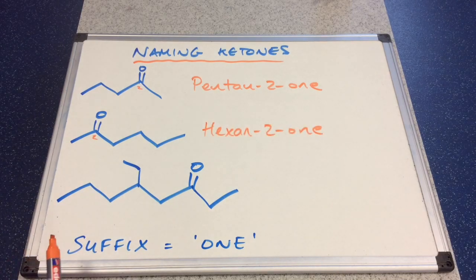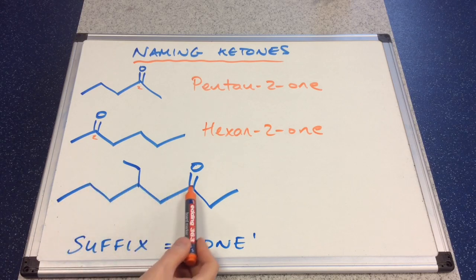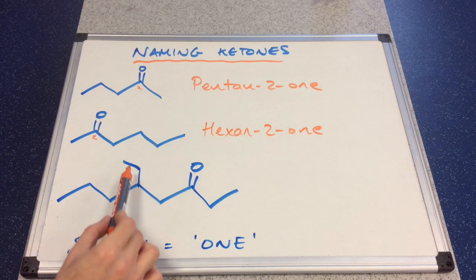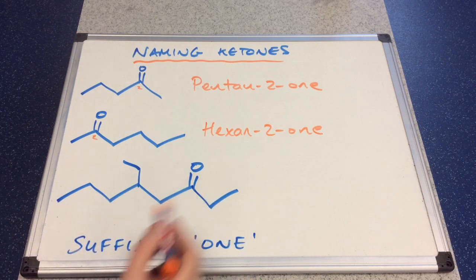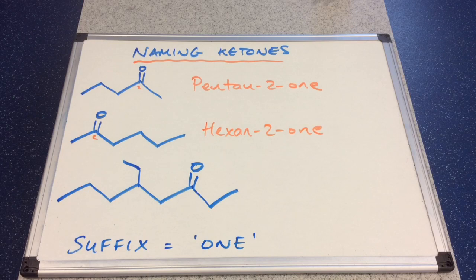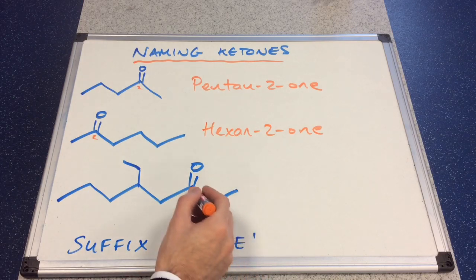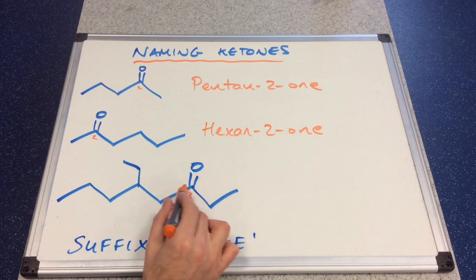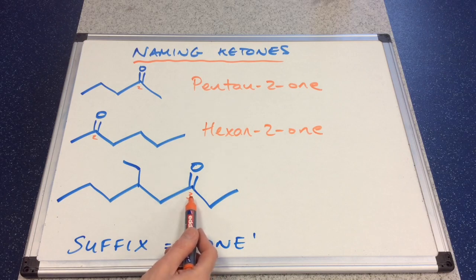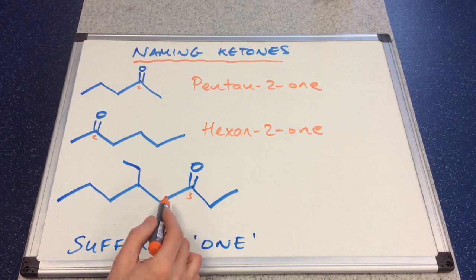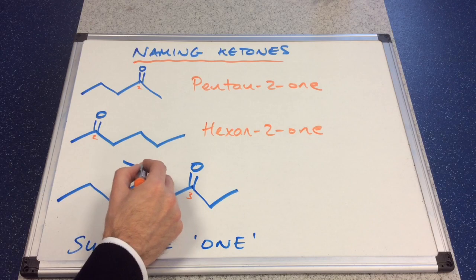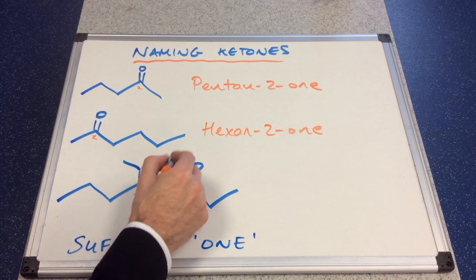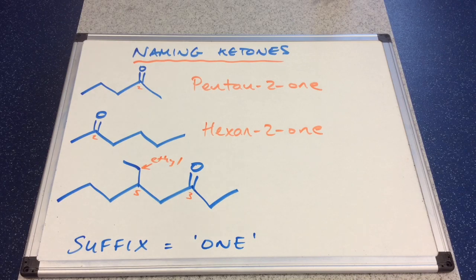The third one, we've got a continuous chain of eight — that's obviously longer than the other chain of seven. So the longest chain is eight long, giving us 'oct'. Where's the C double bond O? It's at position three — counting from right to left gives us the smaller number, fixing that carbon at three. Therefore the next carbons are four and five. The branch at carbon five is an alkyl group — it's an ethyl group. So we're going to call this 5-ethyl-octan-3-one.